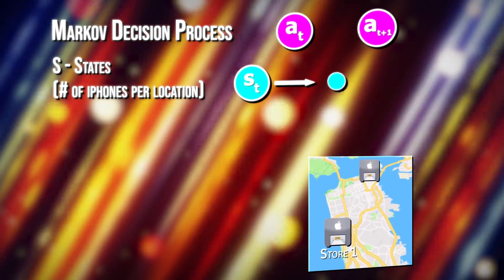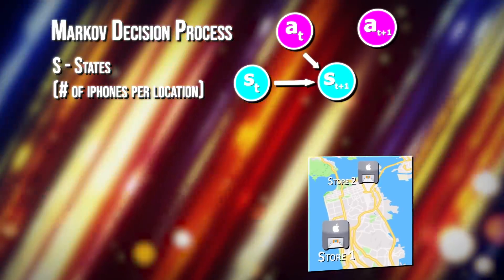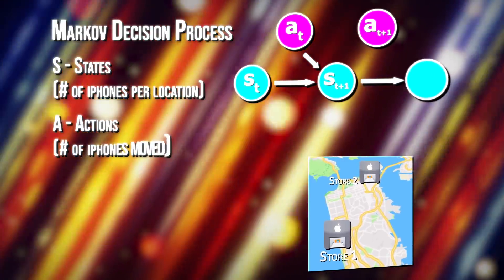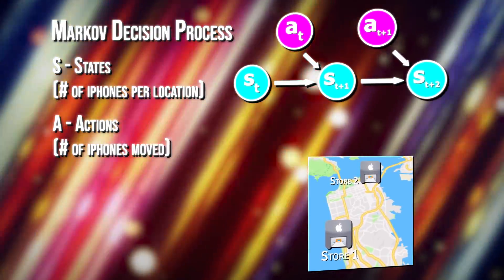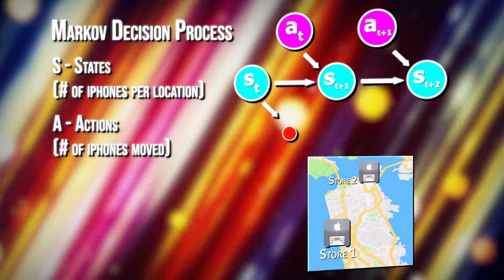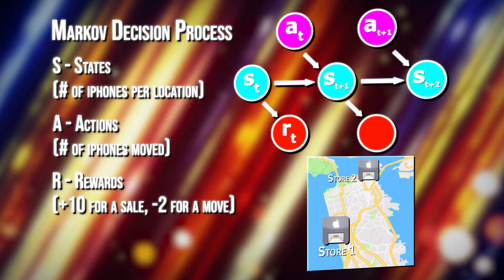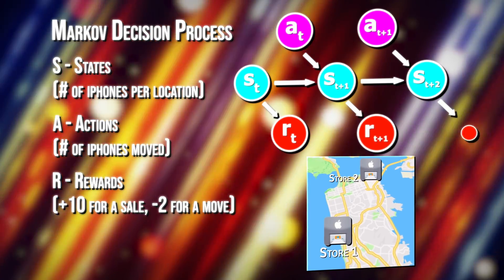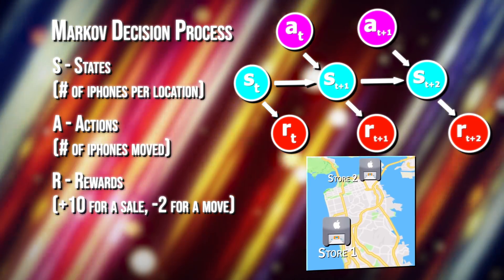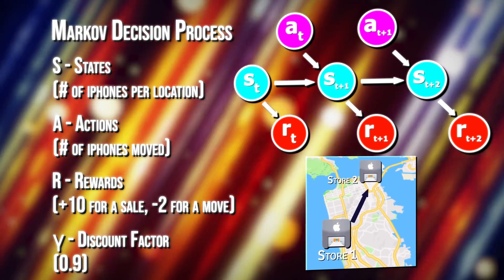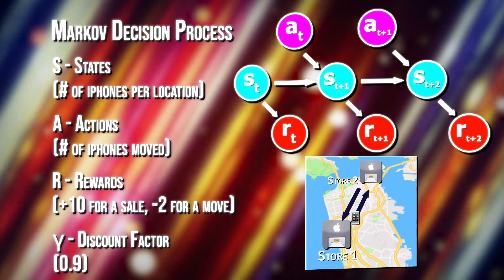A state here can be considered the number of iPhones at each location at the end of the day. The actions we could take are the net number of iPhones moved between the two locations overnight, the maximum possible being five. Every time an iPhone is bought, we earn $10 in commissions, so that can be our reward value.